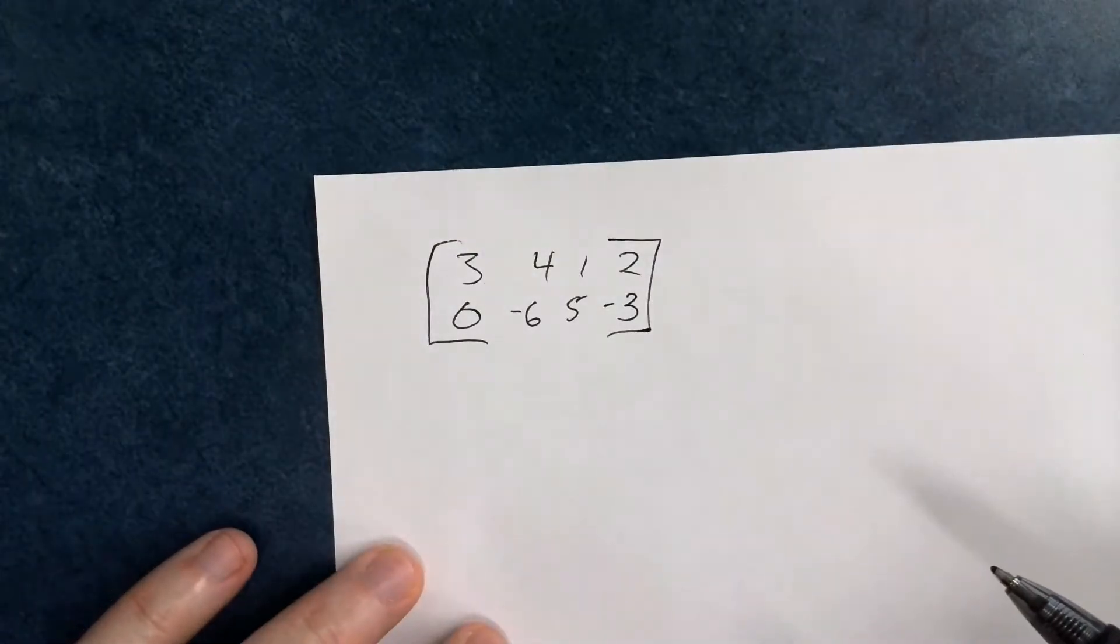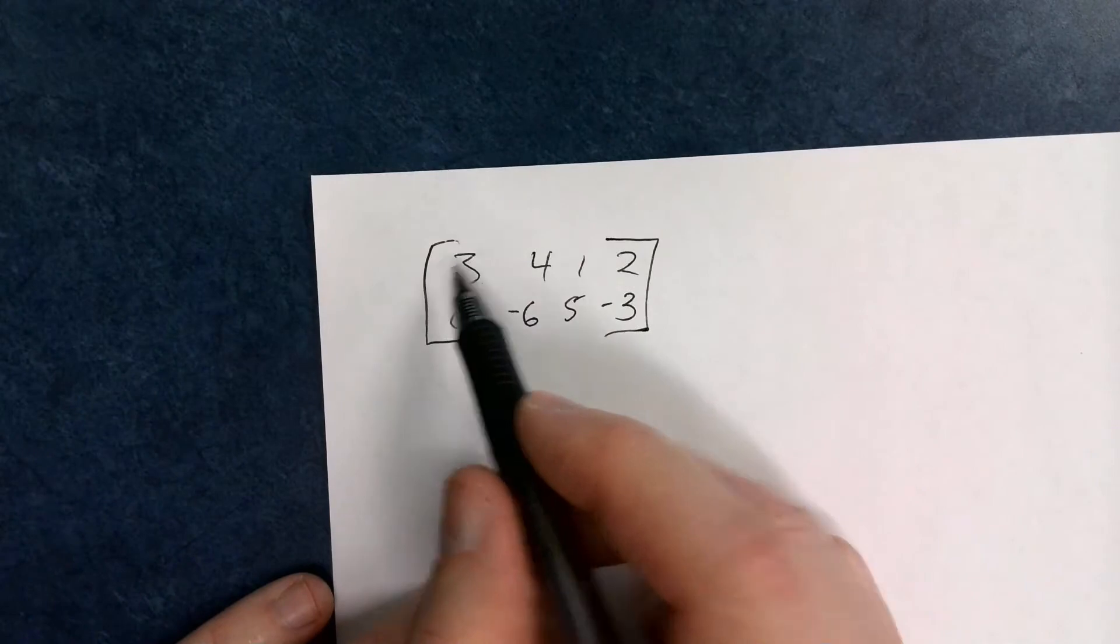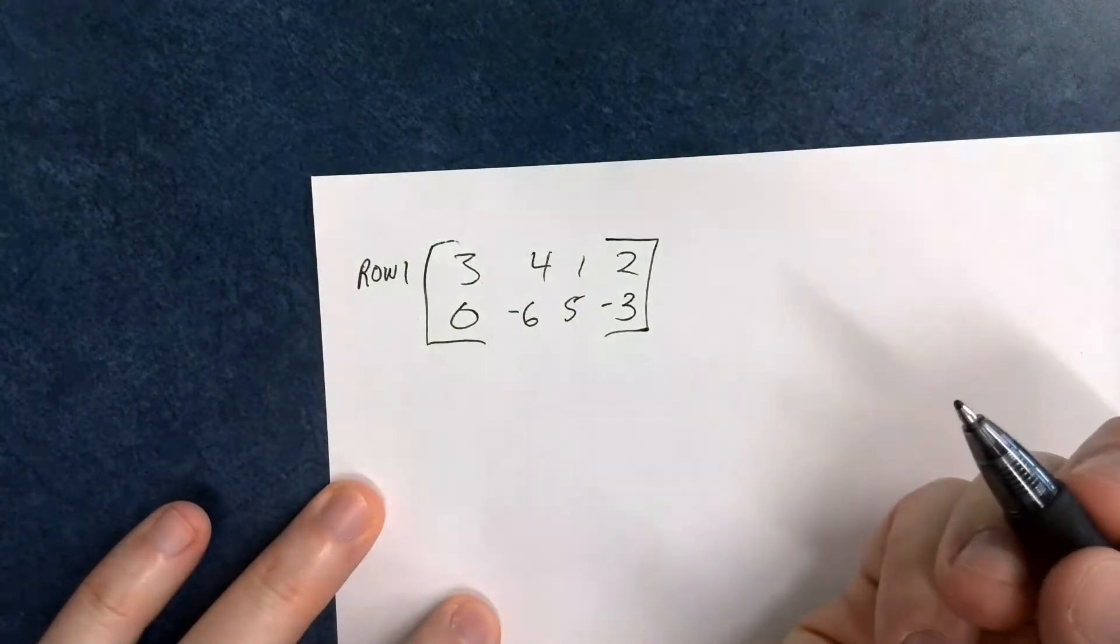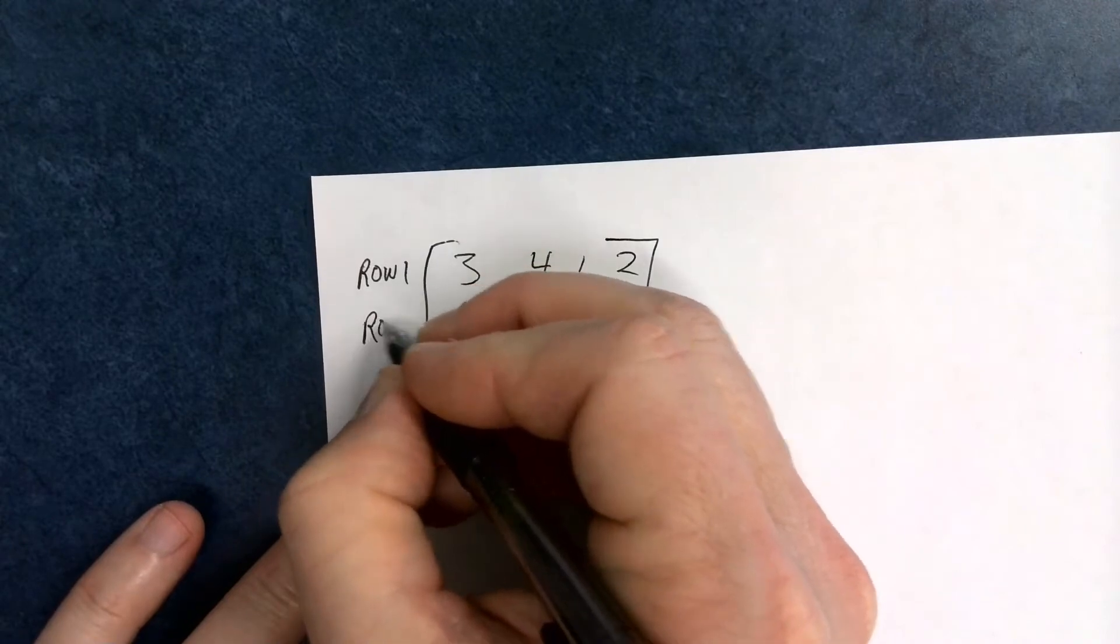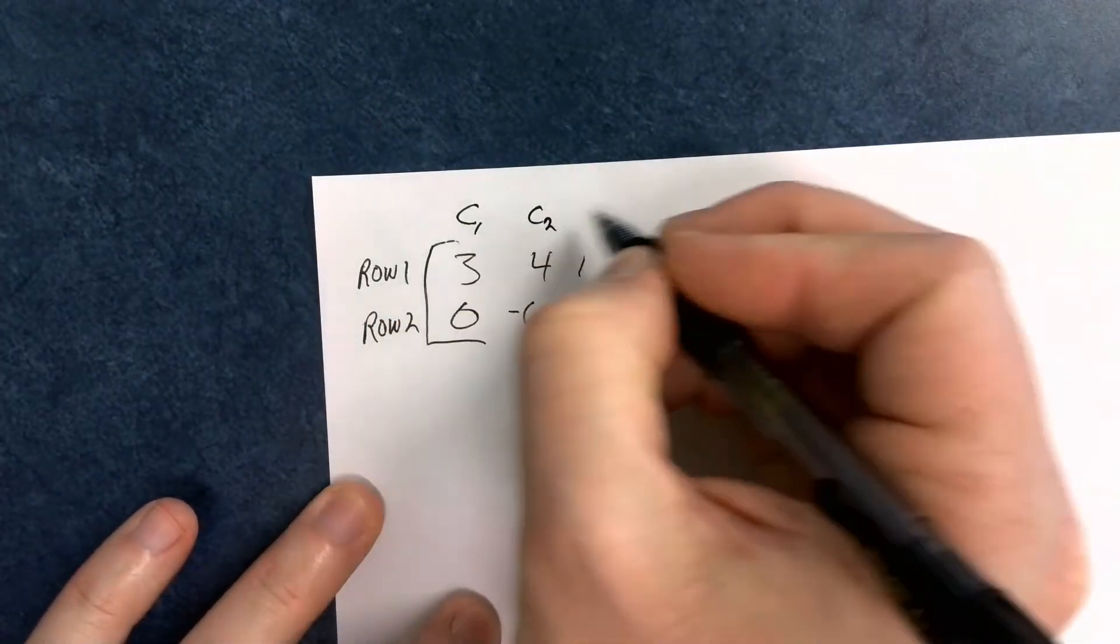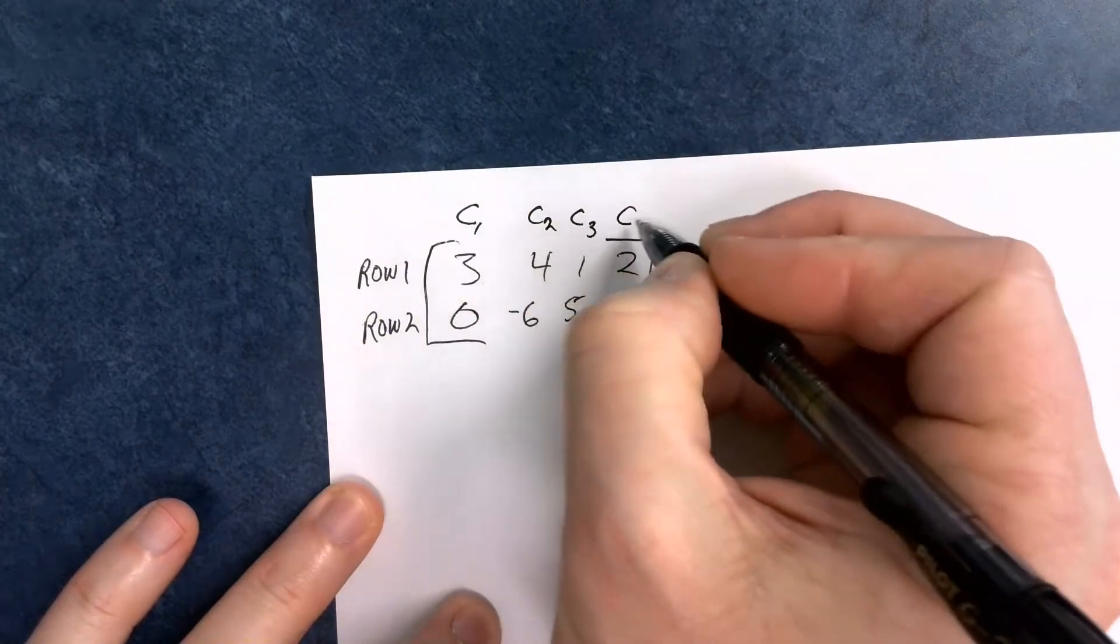It stores information. And right here, you can see this is going across. This is row 1. This is row 2. And column 1, column 2, column 3, I'm just not going to write them all out, column 4.